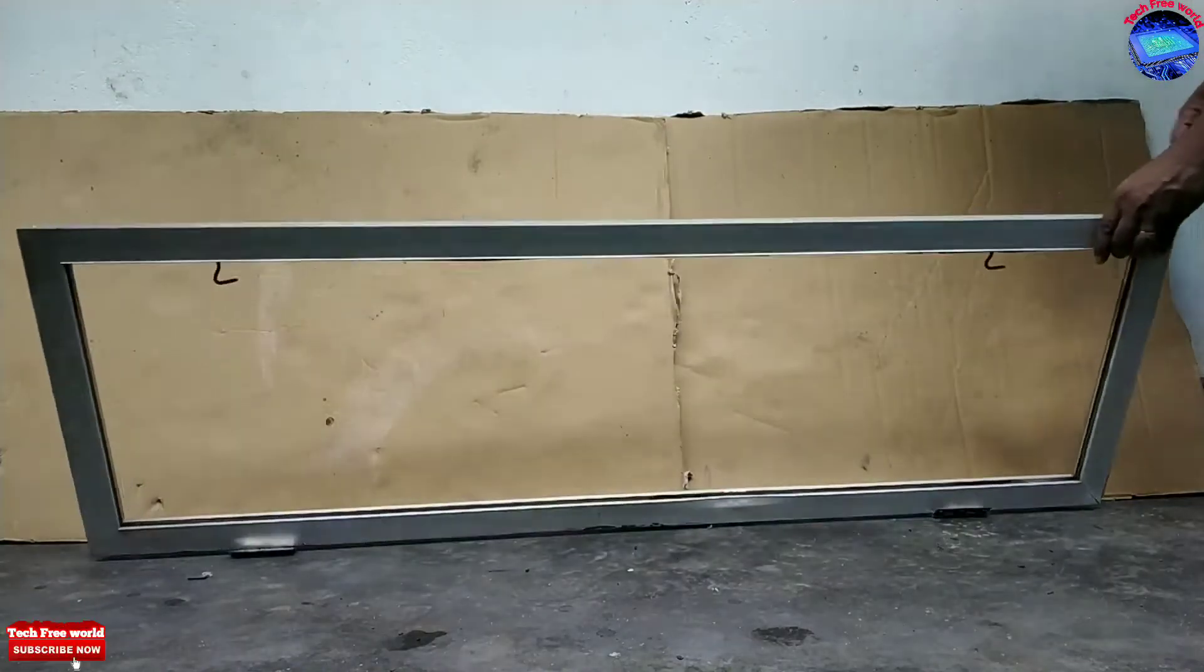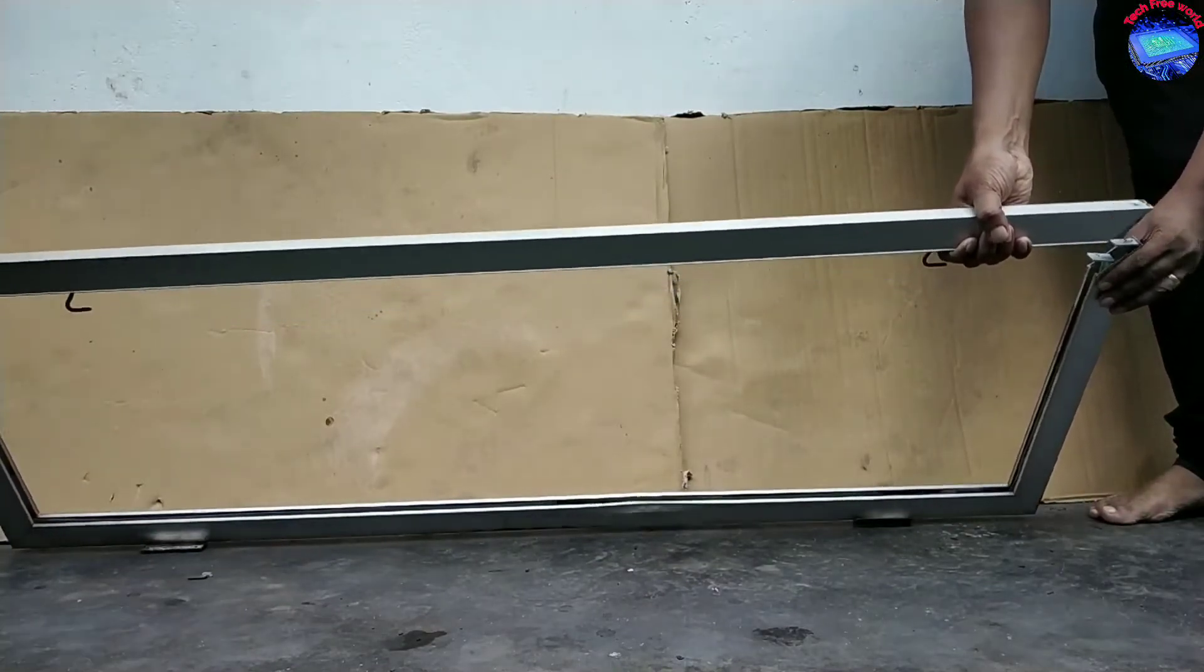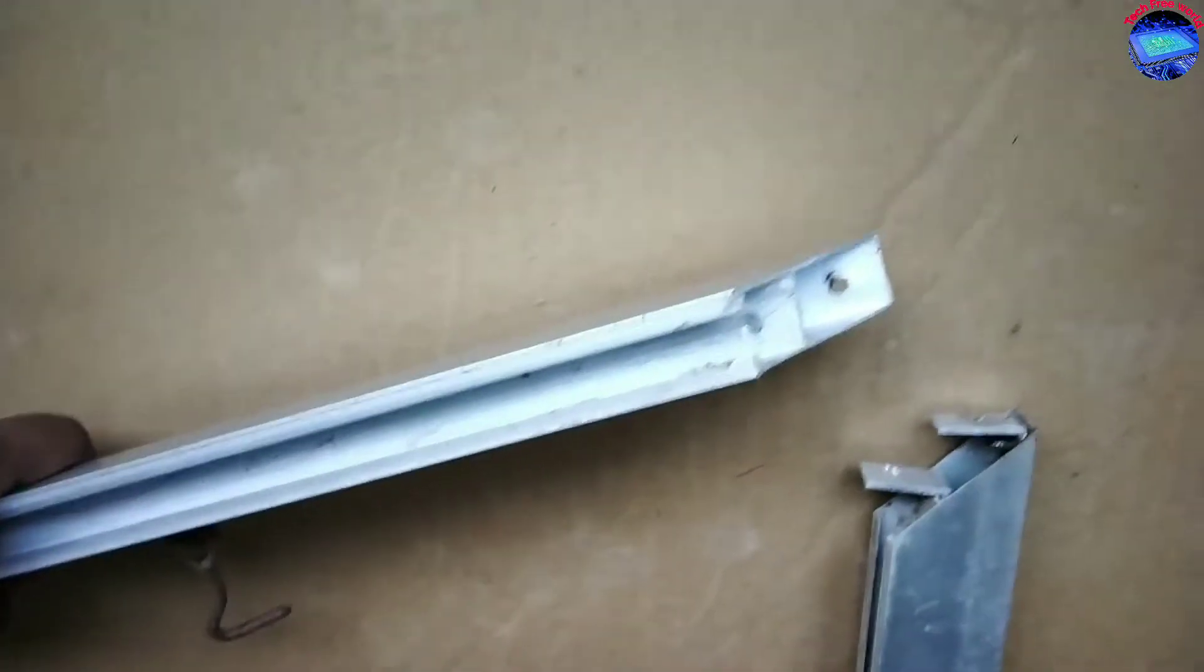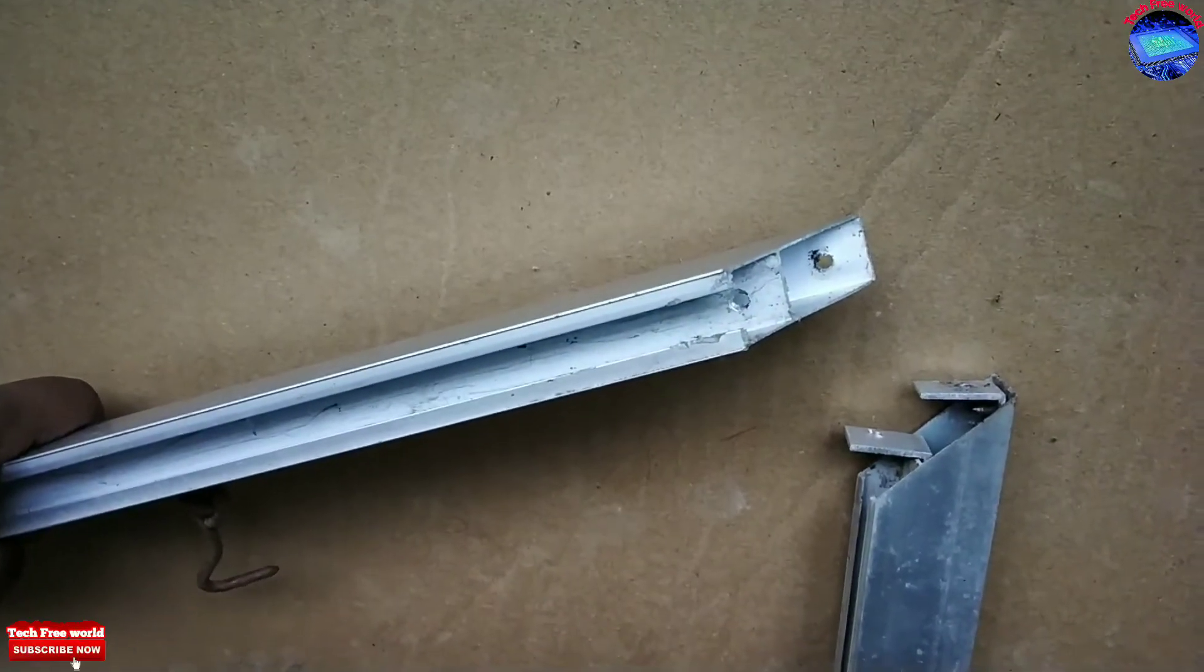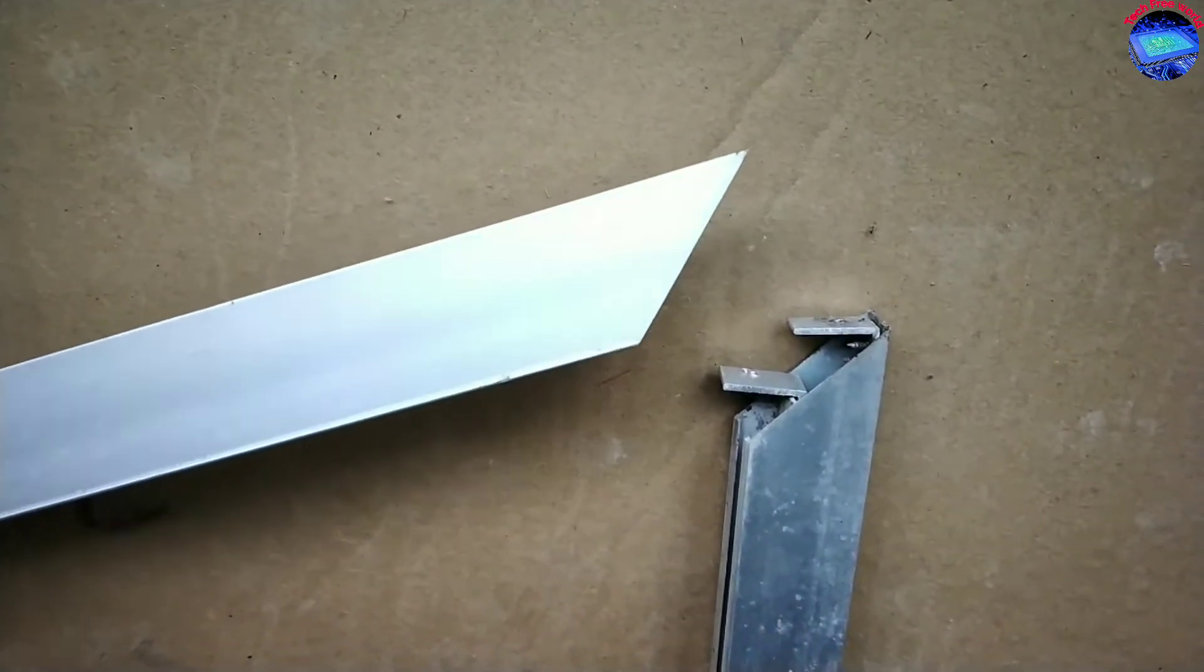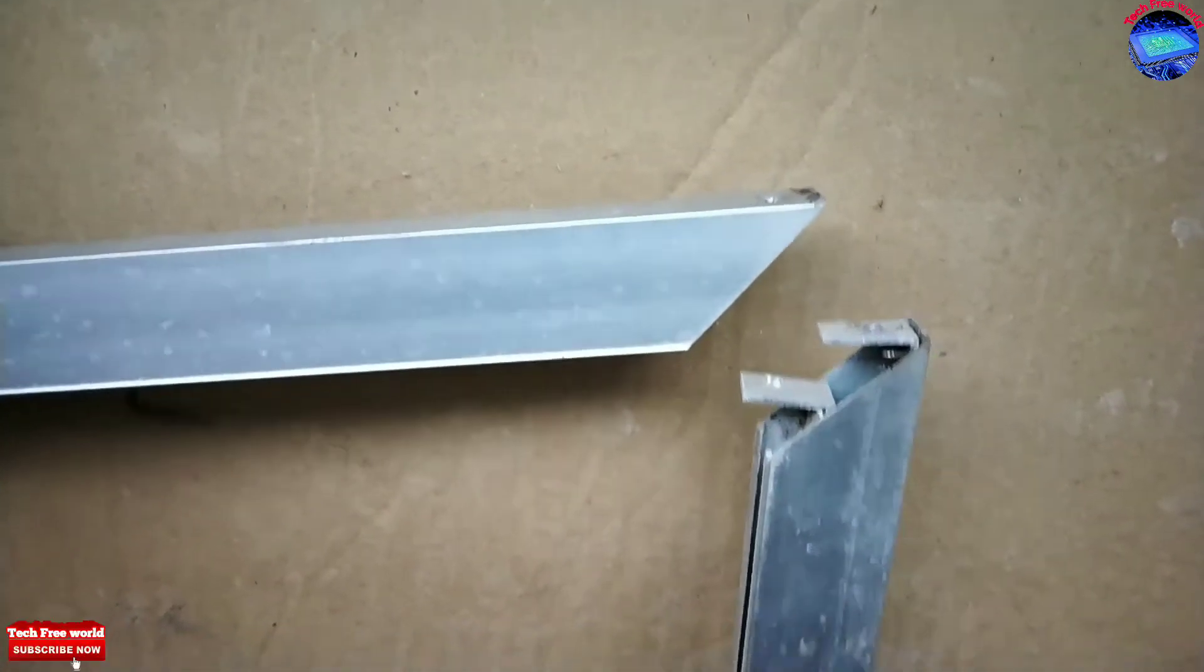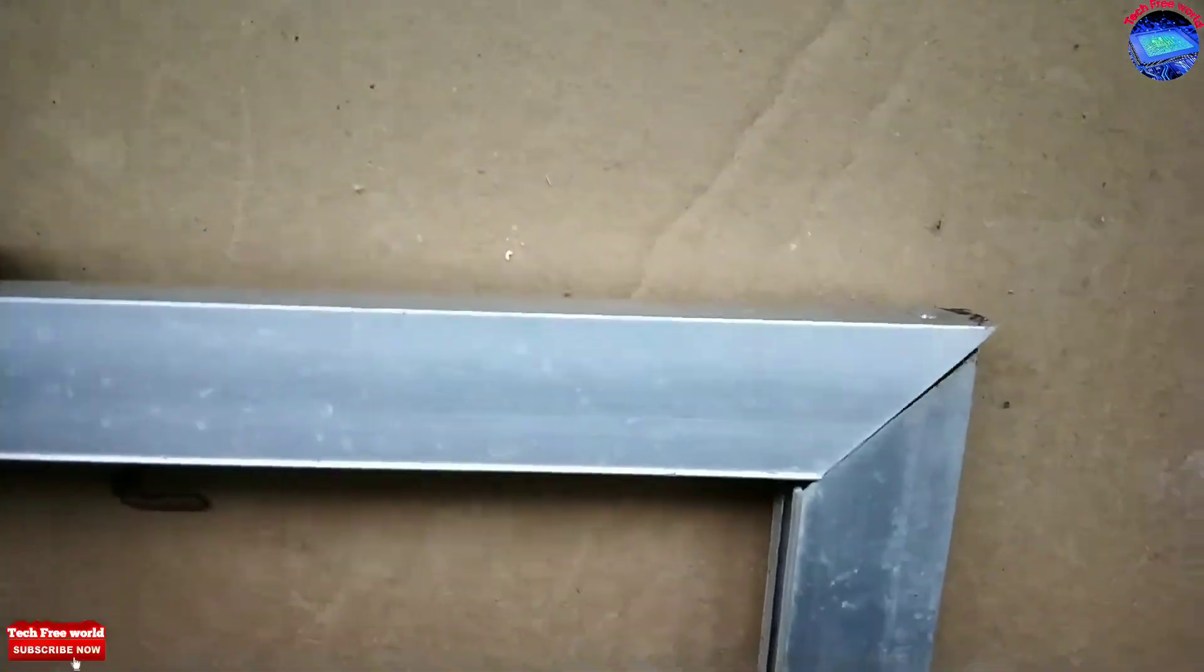And just pull back. We can remove it easily. You can see two clips inside of this window. The top side clip is for fixing its frame and the bottom side clip is for holding glass. And the fixing position is like this.